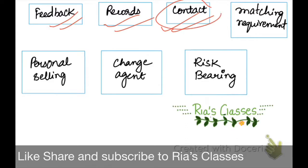The next function is Contact. The distribution channel acts as a contact person between the buyer and the seller, facilitating communication between both parties. Next is Matching Requirement. Customers and the market require a lot of changes, so the distribution channel helps match goods to the requirements of the market — this is a form of merchandising.